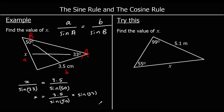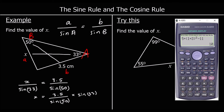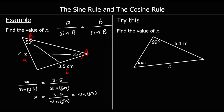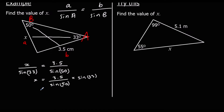We just have to type this into the calculator. So let's type it straight in — fraction button — 3.5 over sine 50 times sine 33. So we've got our answer, and to two decimal places that's 2.49. And it's in centimetres, so it's 2.49 centimetres to two decimal places.